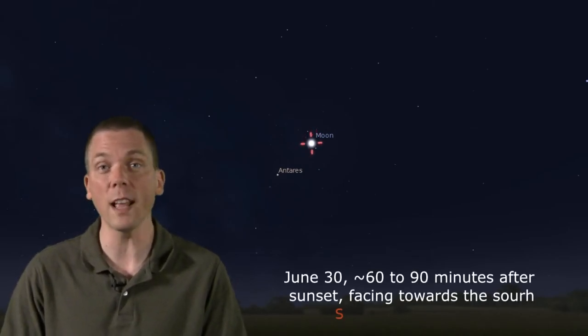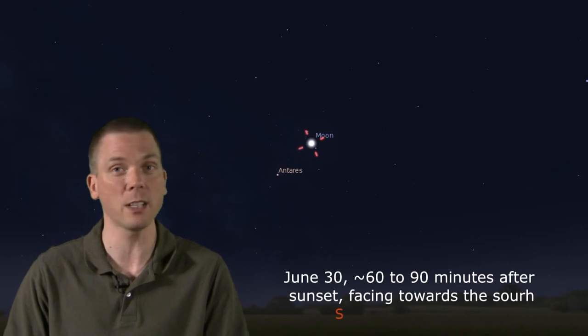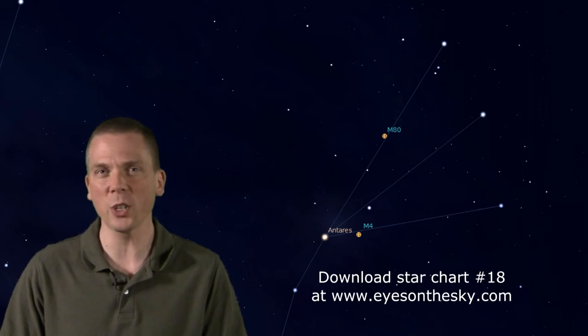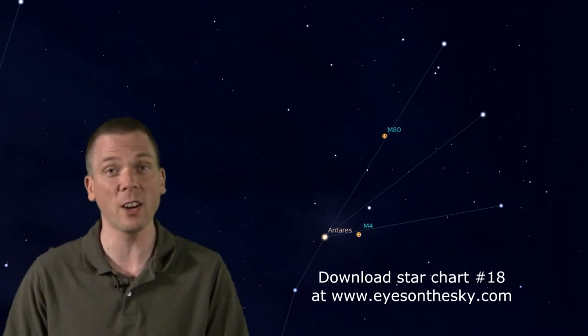And finally on the 30th, the moon slips into Scorpius, just 7 degrees from the red star Antares we talked about last week, so if you weren't sure where to find it, look near the moon on the 30th. There are some telescopic globular clusters in this area, M4 and M80, but you will want to wait at least a week or two so moonlight doesn't interfere with trying to locate and observe them.